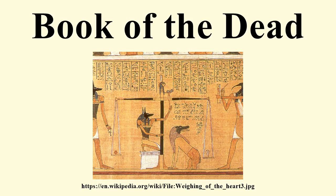The nature of the afterlife which the dead person enjoyed is difficult to define, because of the differing traditions within ancient Egyptian religion. In the Book of the Dead, the dead were taken into the presence of the god Osiris, who was confined to the subterranean Duat. There are also spells to enable the Ba or Akh of the dead to join Ra as he travelled the sky in his sun barque, and help him fight off Apep. The Book of the Dead also depicts the dead living on in the Field of Reeds, a paradisiac likeness of the real world, depicted as a lush, plentiful version of the Egypt of the living.